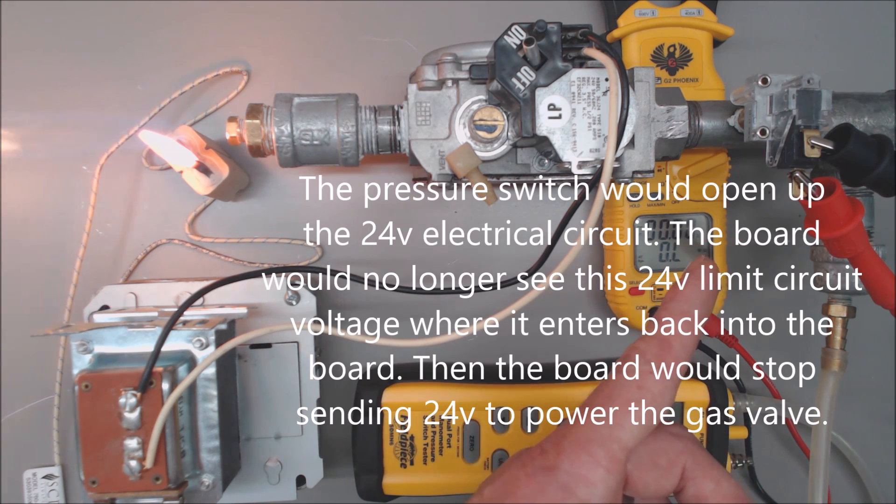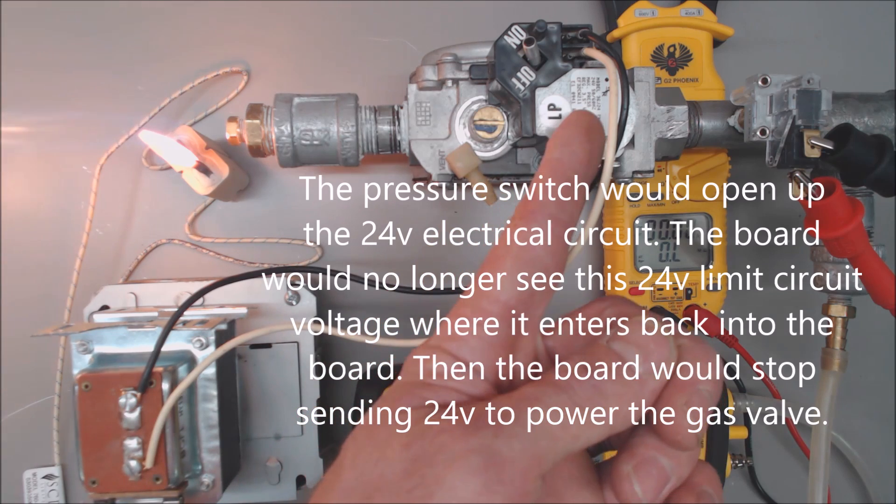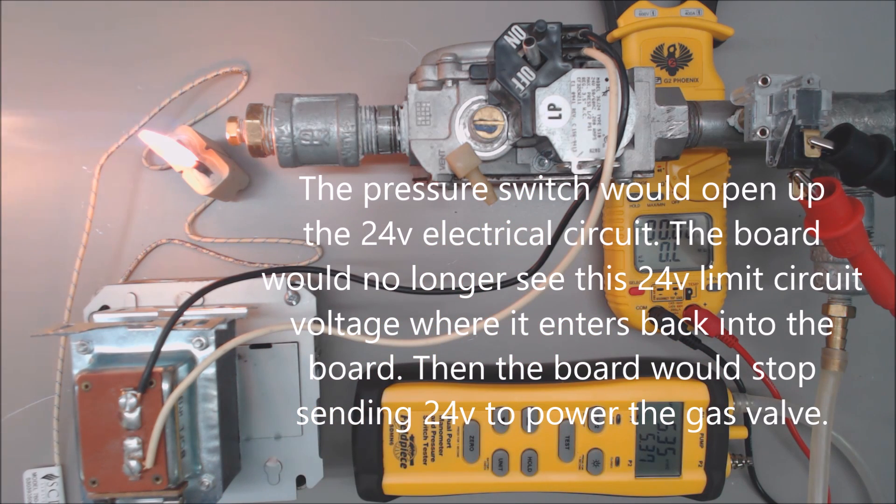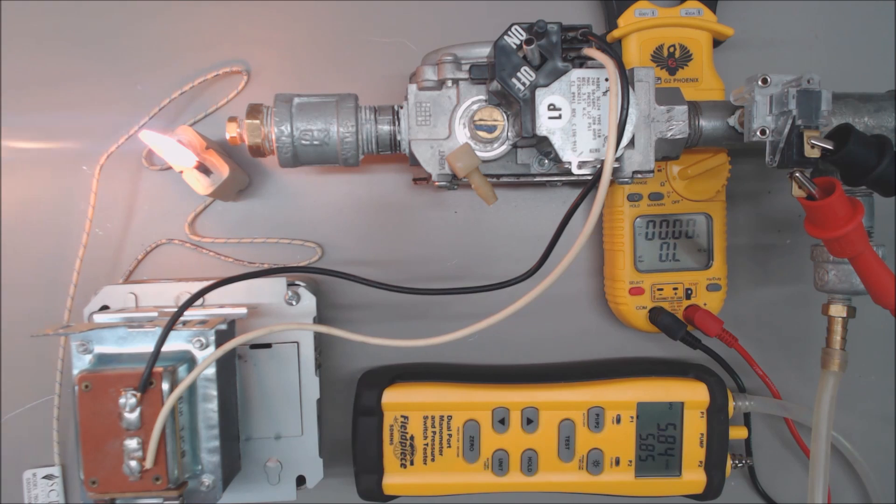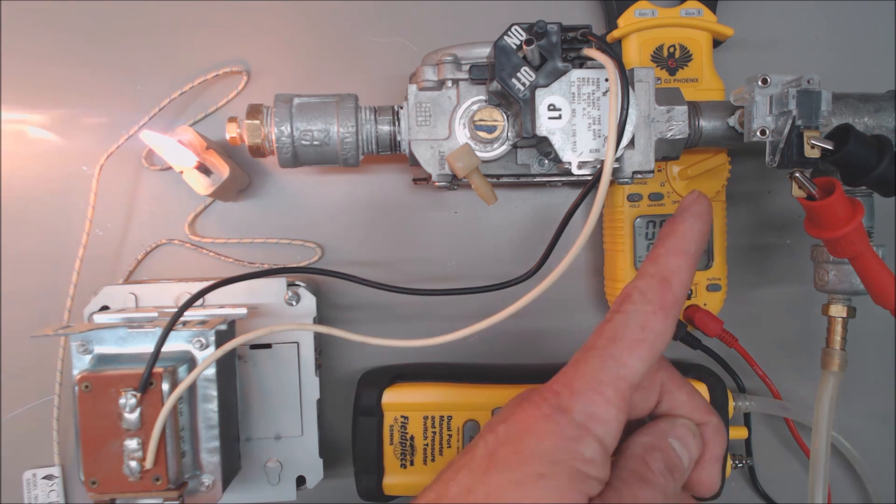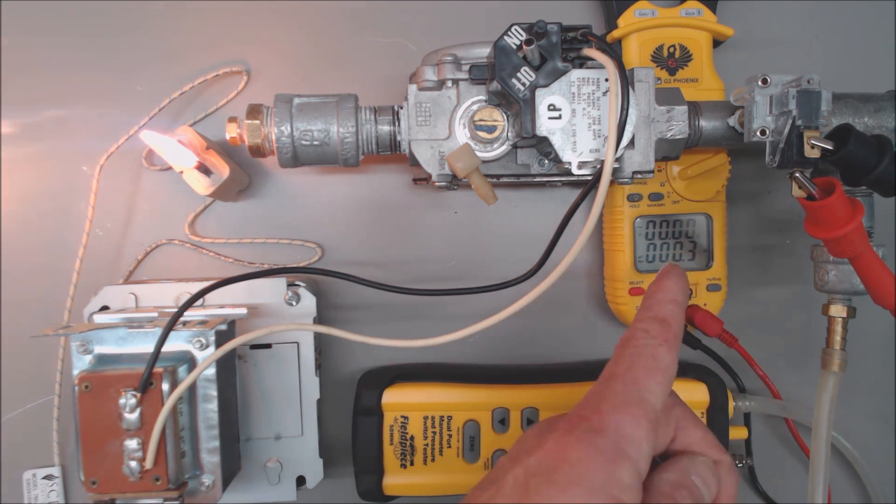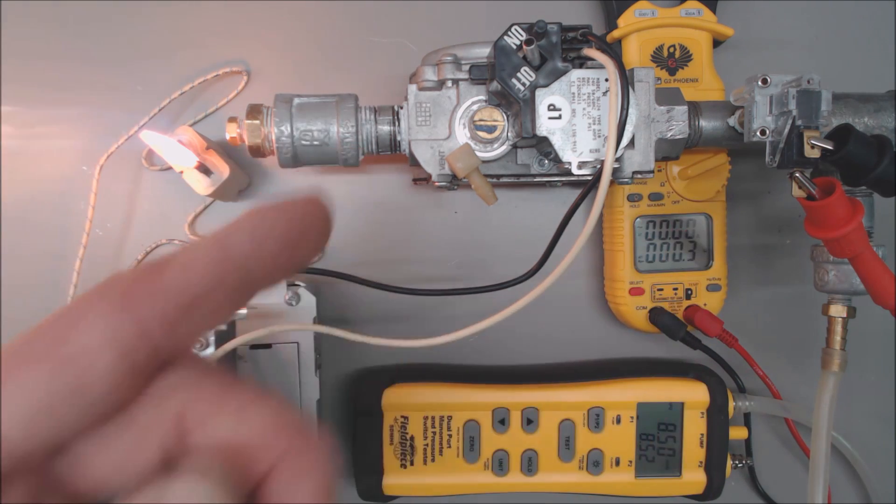So what that would normally do is that would send the signal to the control board telling basically the voltage to stop here and for the blower motor to turn on in order to cool the heat exchanger down. Now we're going to go ahead and allow the gas flow to come up and we're going to see when this switch ends up closing the electrical circuit again. Okay, so it looks to be somewhere between 8.5 and 6 inch water column when this ends up opening and closing in order to provide the safety for the furnace limit circuit.